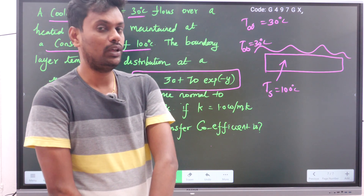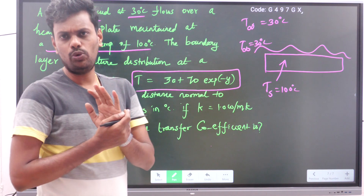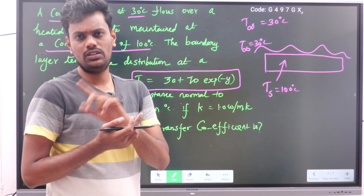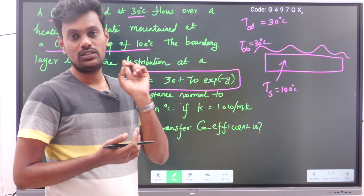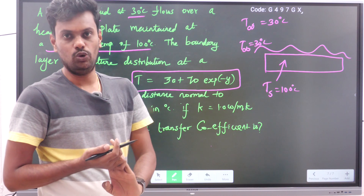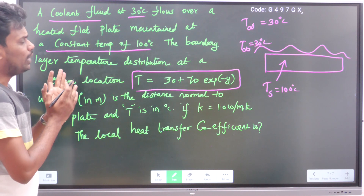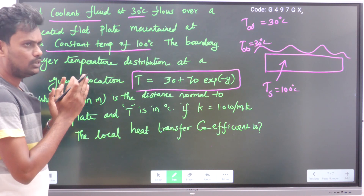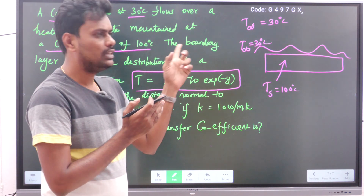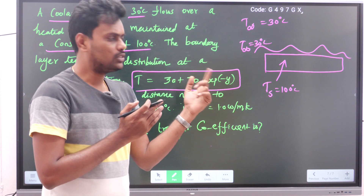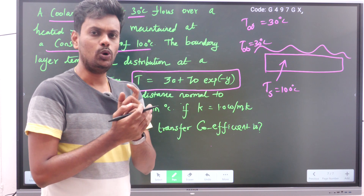This problem is purely based on thermal boundary layer thickness. If you watched the previous sessions you will understand what thermal boundary layer thickness is — I explained the theory there, and now we are solving a problem based on it. First, understand what is given: there is a plate, fluid is flowing over it at 30 degree Celsius, and the plate is maintained at 100 degree Celsius.